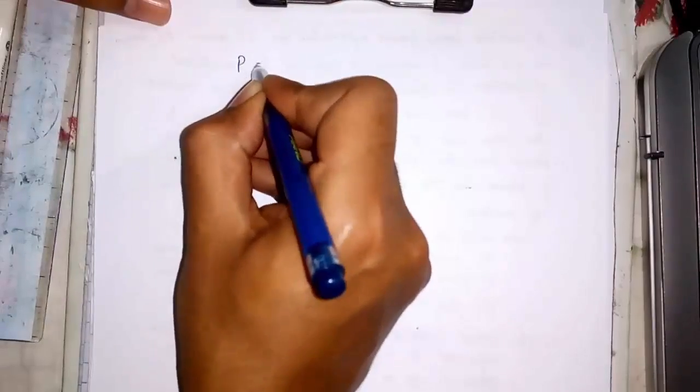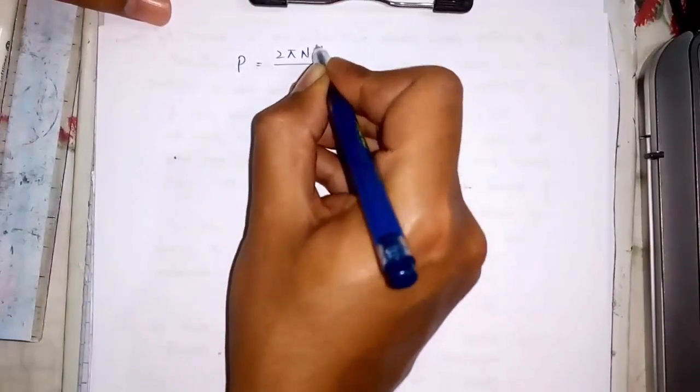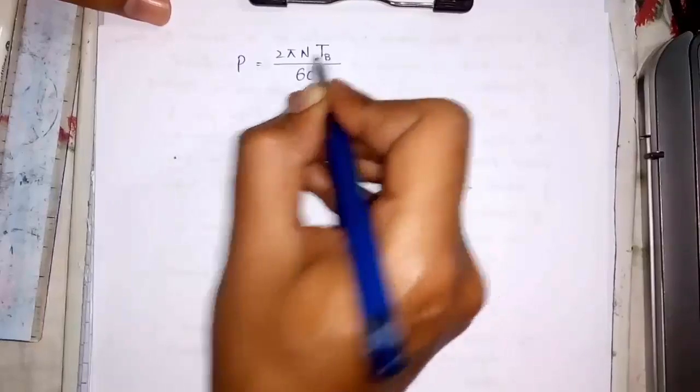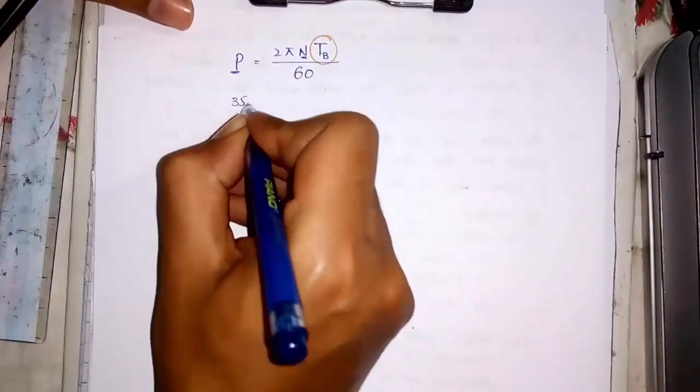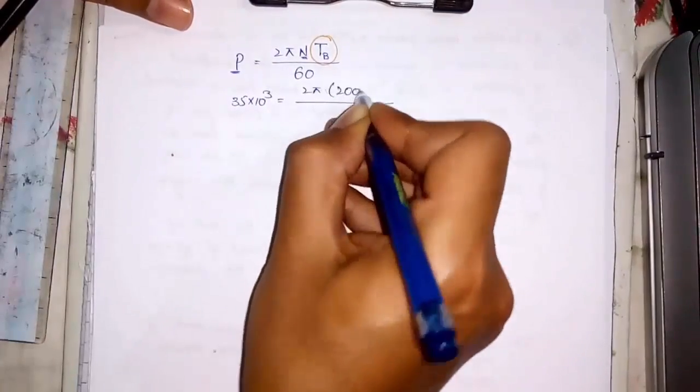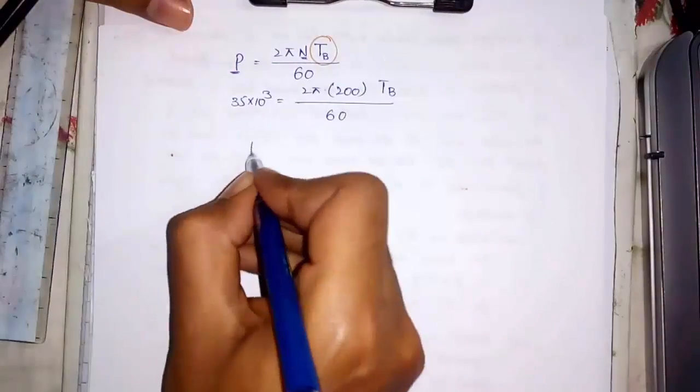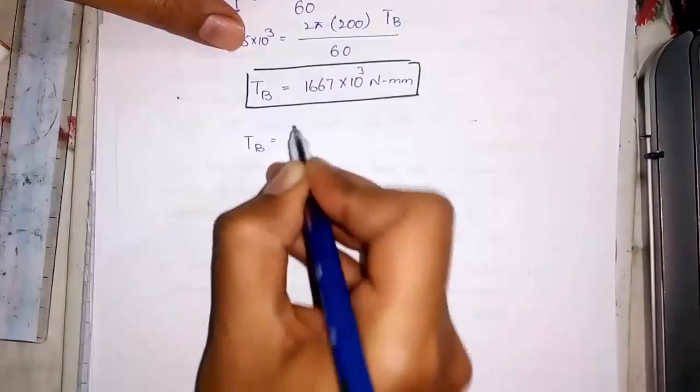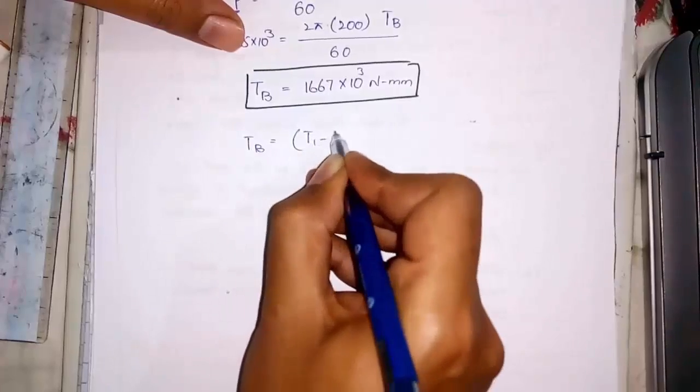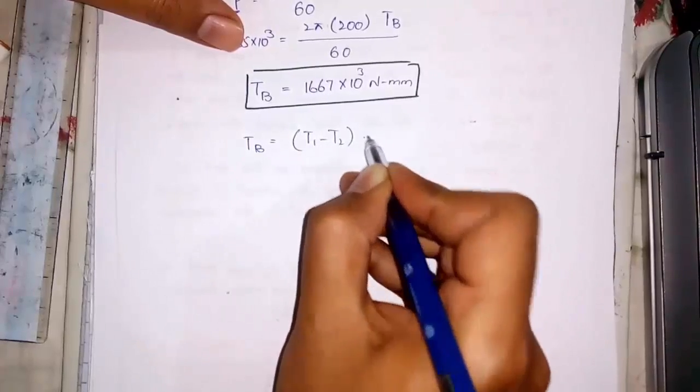We have tension ratio. Now apply power formula. From it we will find Tb which is braking torque. Power and rpms are given.